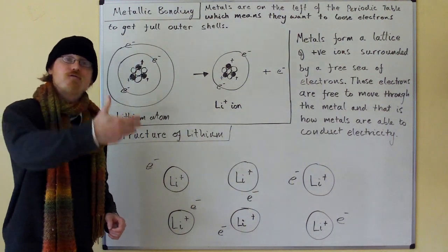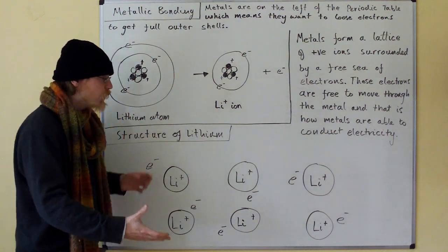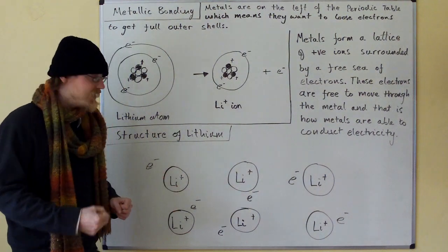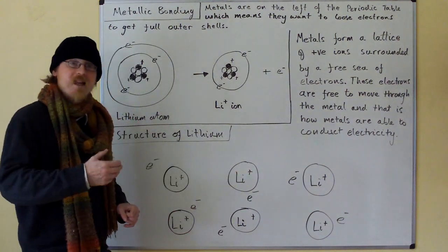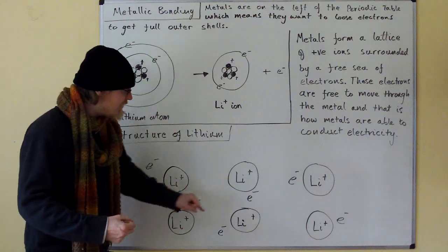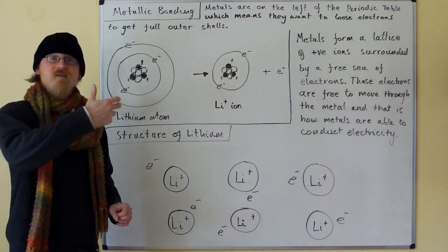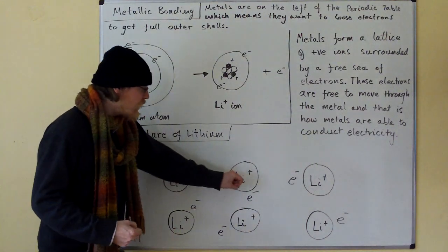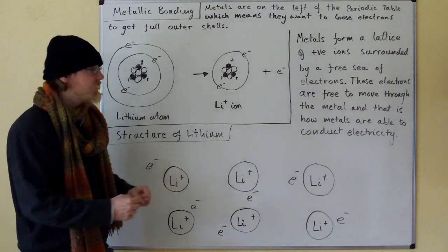And these electrons form a free sea of electrons which bind the lattice together because the positive lattice ions are attracted to the negative electrons. The negative electrons are attracted to the positive ions, and this binds the metal together.